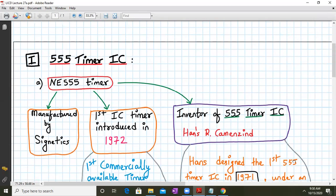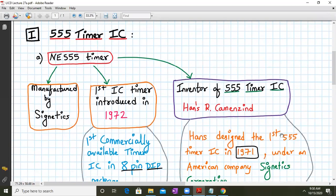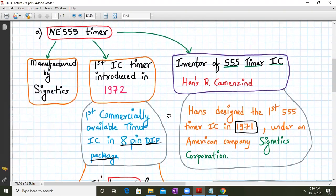Okay, now let us go to the inventor of this 555 timer IC. It was Hans Camenzind. So Hans designed the first 555 timer IC in the year 1971 under an American company, Signetix Corporation.